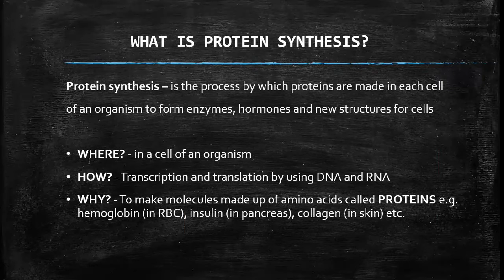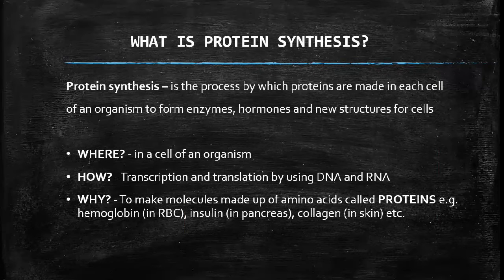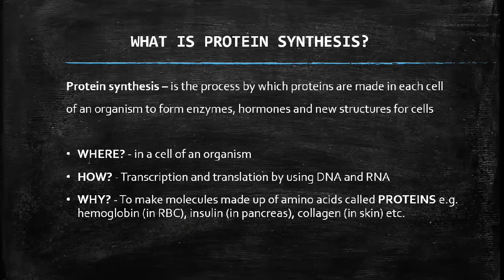Protein synthesis is the process by which proteins are made in a cell of an organism to form enzymes, hormones, and other cell structures. As the word itself suggests — in biology, synthesis means making or producing something — so here we are producing proteins in our cells. This process occurs in a cell via two processes: transcription and translation, using DNA and RNA. It is important because we make molecules built from amino acids to form proteins.